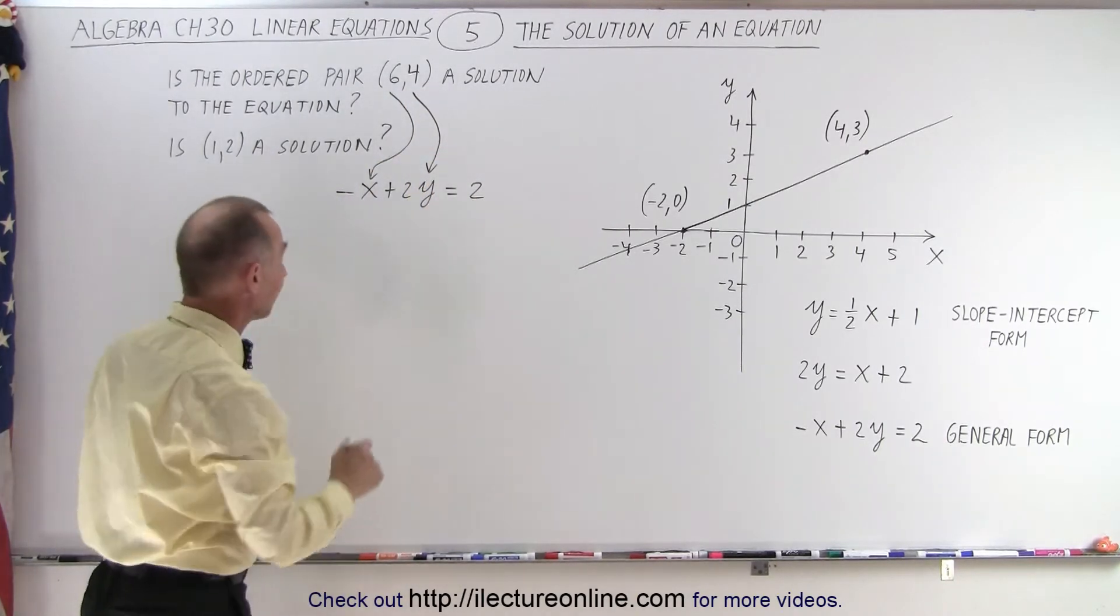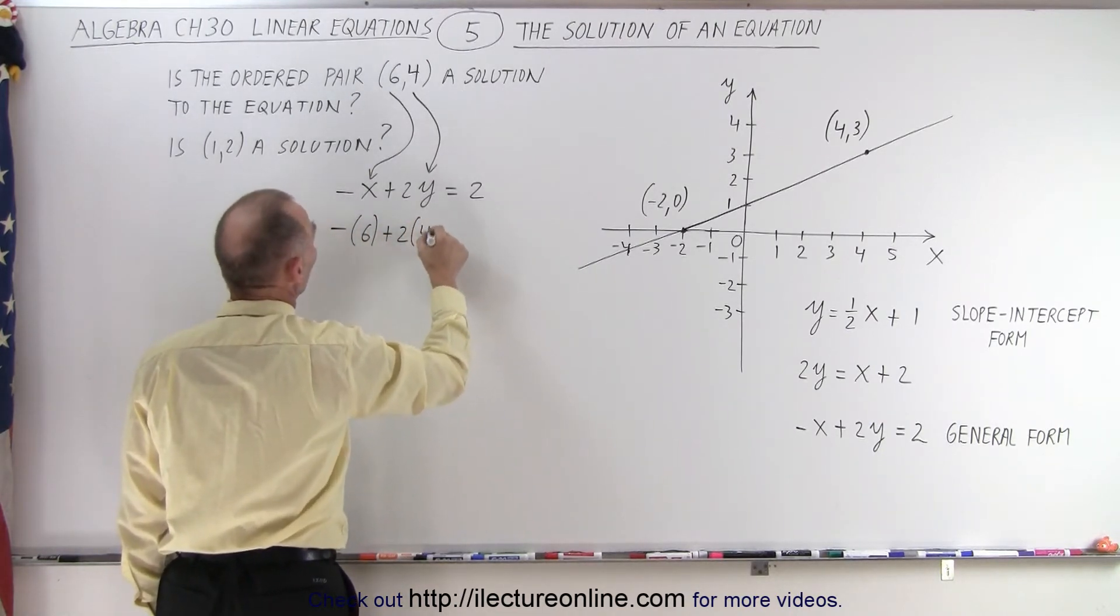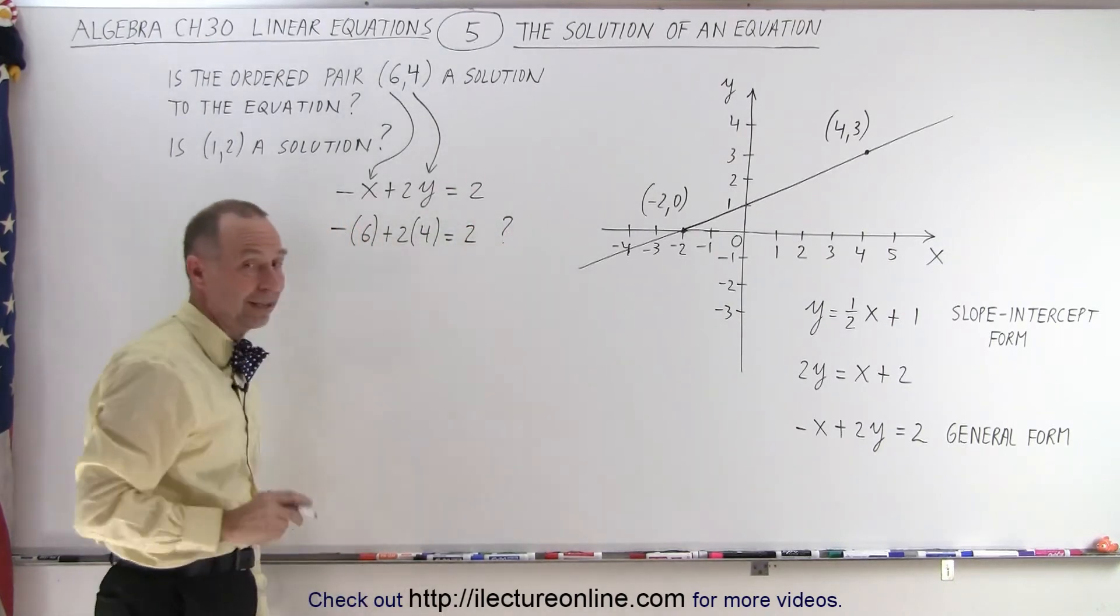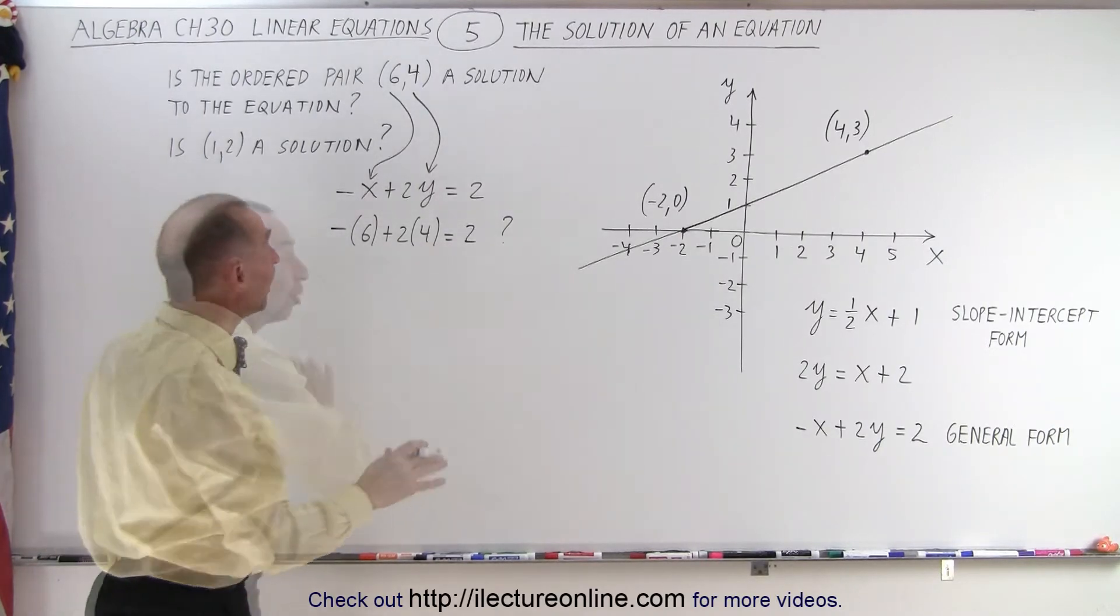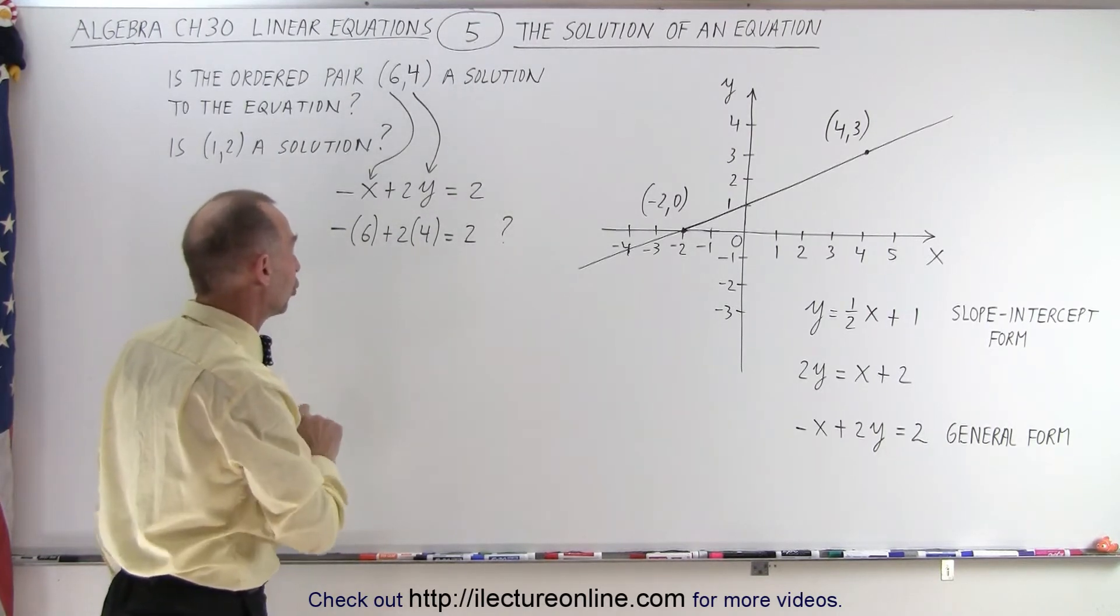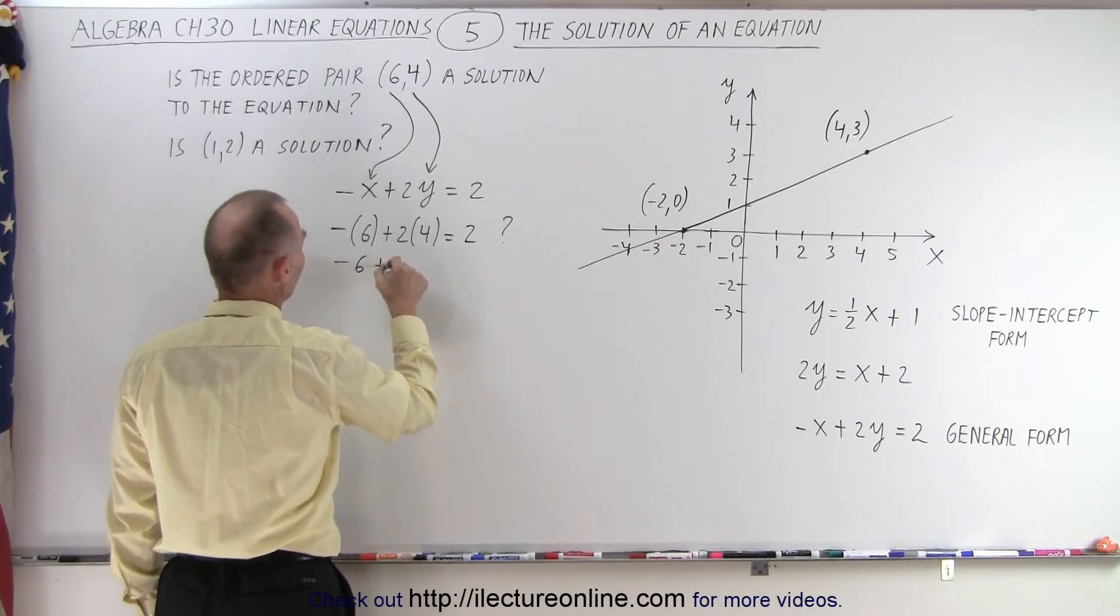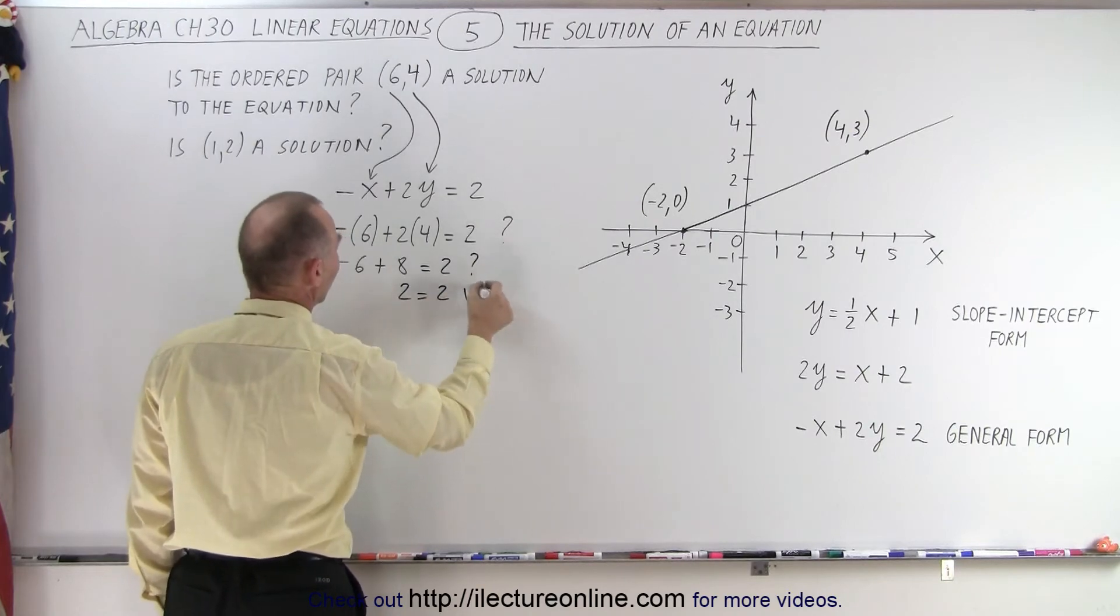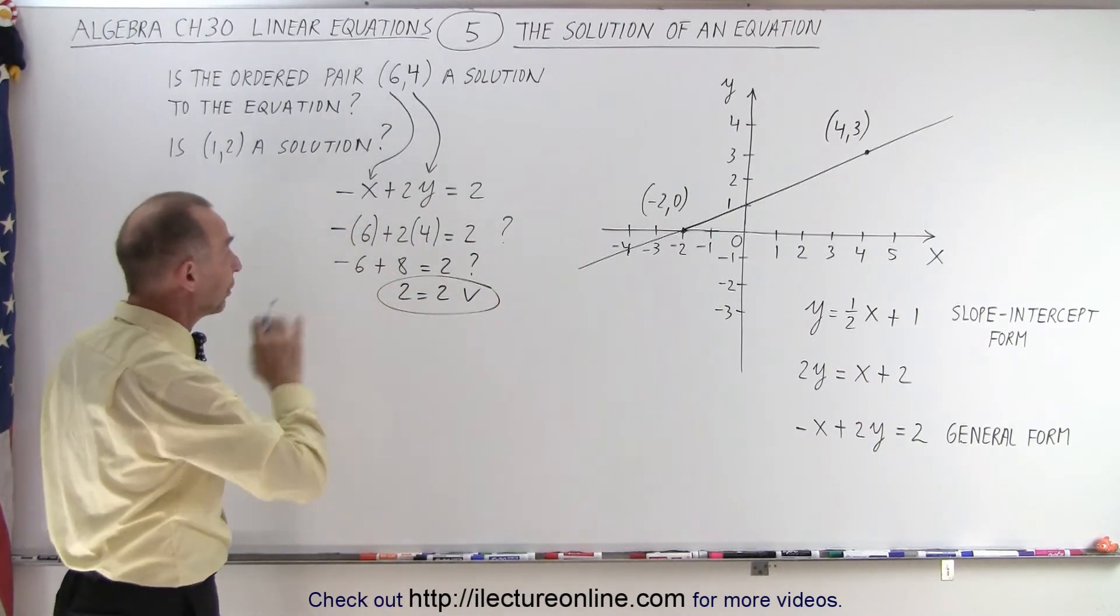So we have -6 + 2 times 4. Is that equal to 2? And of course, that's a question mark. If it is, then it's a solution, or a solution, not the solution, because there are many, many solutions. It's not a singular solution. Now let's check this out. So we have -6 + 8. Is that indeed equal to 2? And sure enough, 2 equals 2. So we verified that yes, that is a solution for that particular equation.